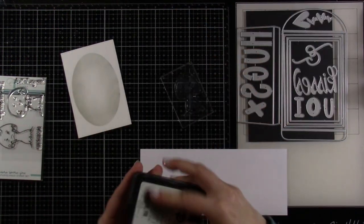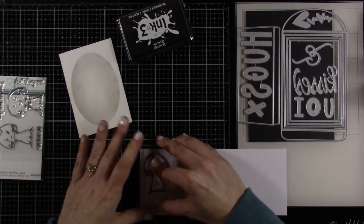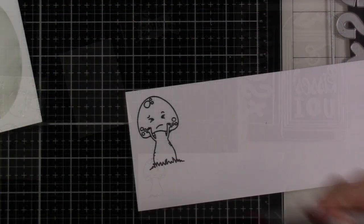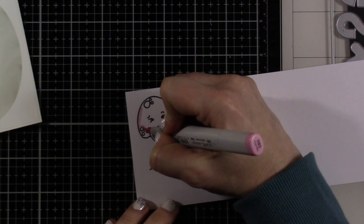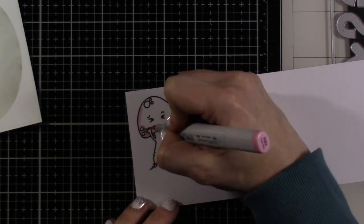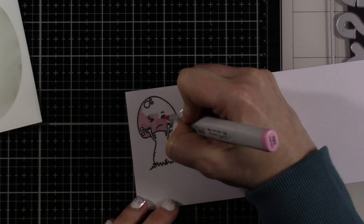So now we're going to stamp our image, which is this little mushroom who looks very upset. And I did that with some blackout ink on Express It cardstock and I'm going to put the colors up on the screen for you.